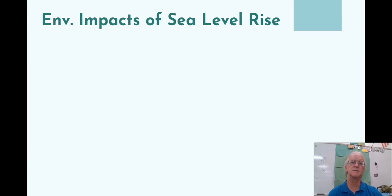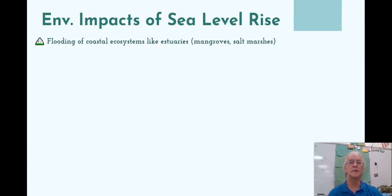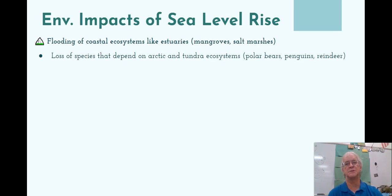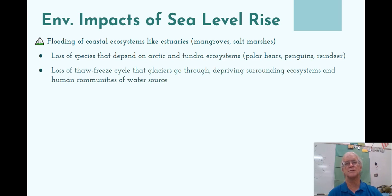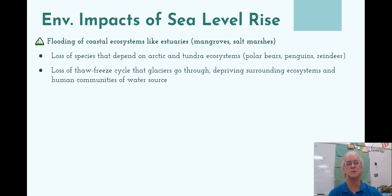The environmental impacts of sea level rise include flooding of coastal regions like estuaries, mangroves, salt marshes, Miami Beach, and Long Beach. There is also loss of species that depend on Arctic and tundra ecosystems, such as polar bears, penguins, and reindeer. Additionally, there is loss of the freeze-thaw cycle that glaciers go through, depriving surrounding ecosystems and human communities of water sources — such as in South America, Asia, and many different places, including California — that depend on glaciers for their water.